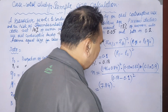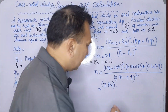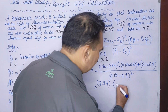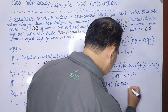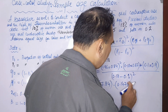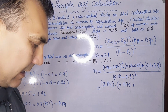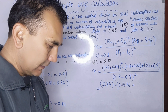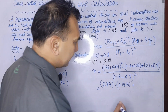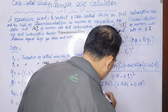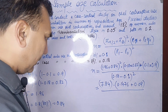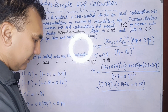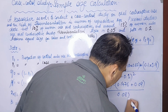Multiplying p1 by q1: 0.18 times 0.82 equals 0.1476. Multiplying p0 by q0: 0.1 times 0.9 equals 0.09. For the denominator: p1 minus p0 is 0.18 minus 0.1 equals 0.08, and squaring that gives 0.0064.